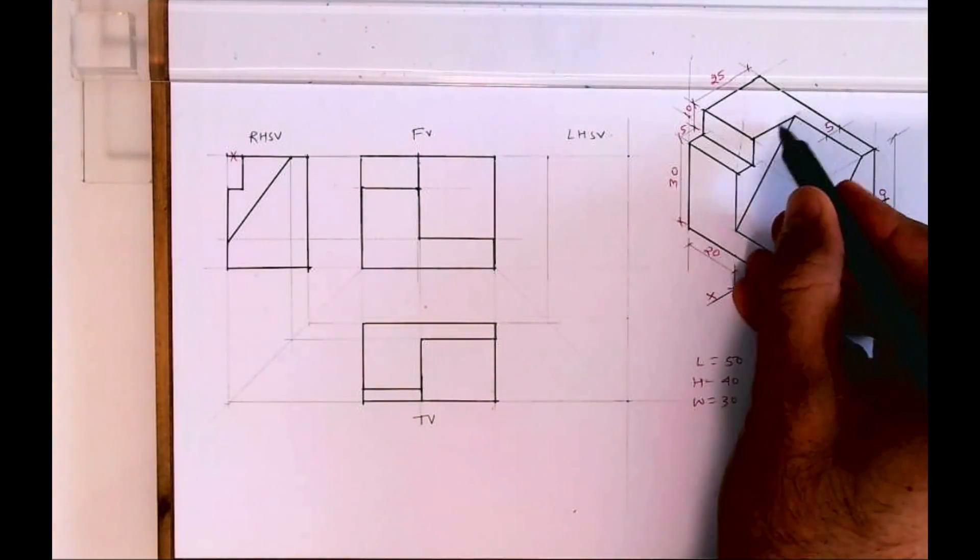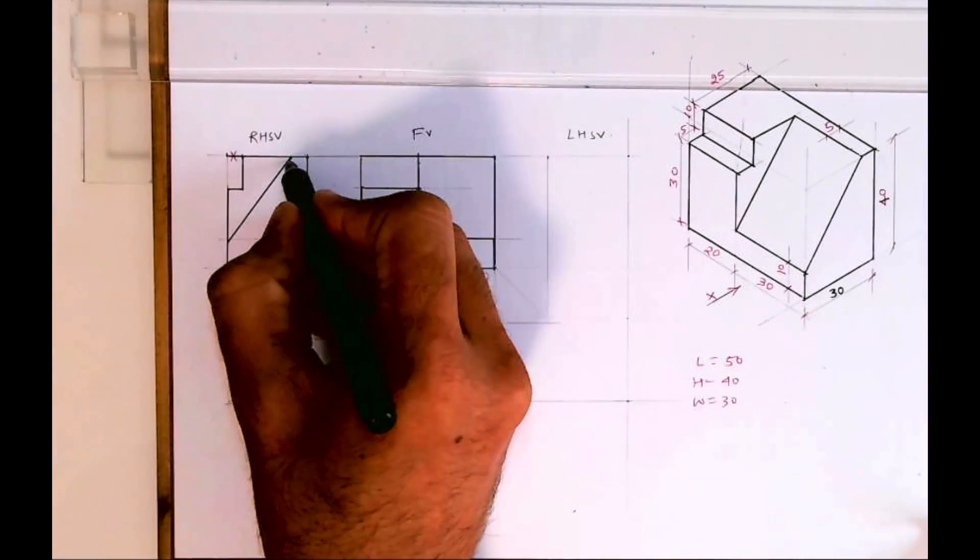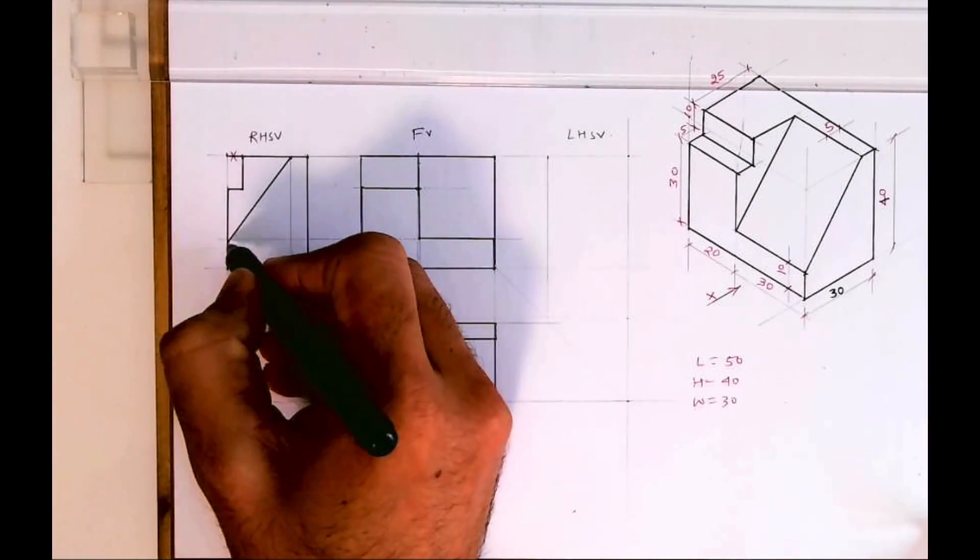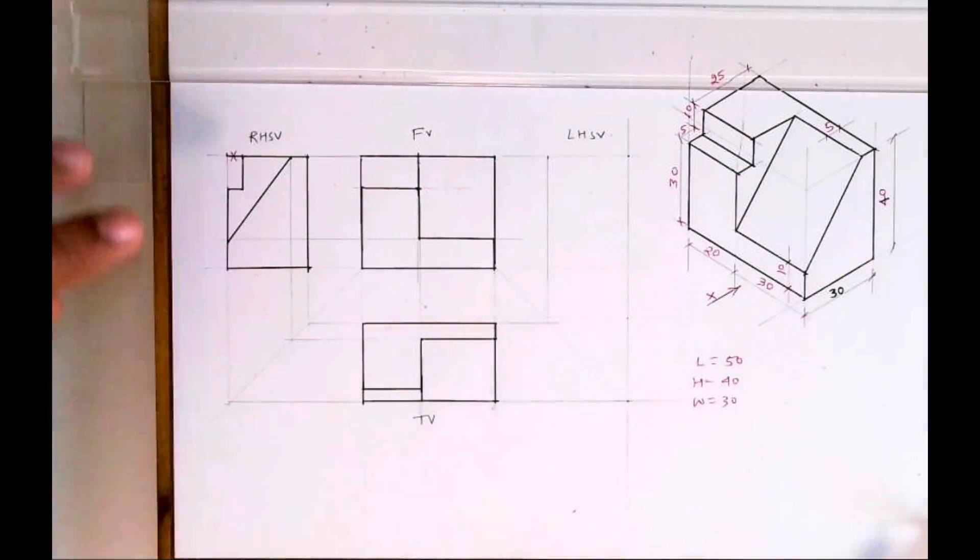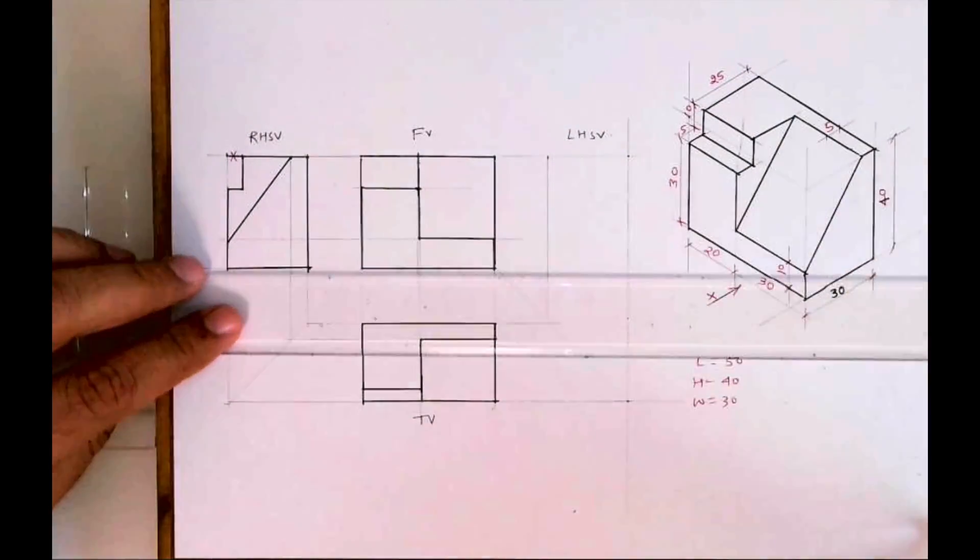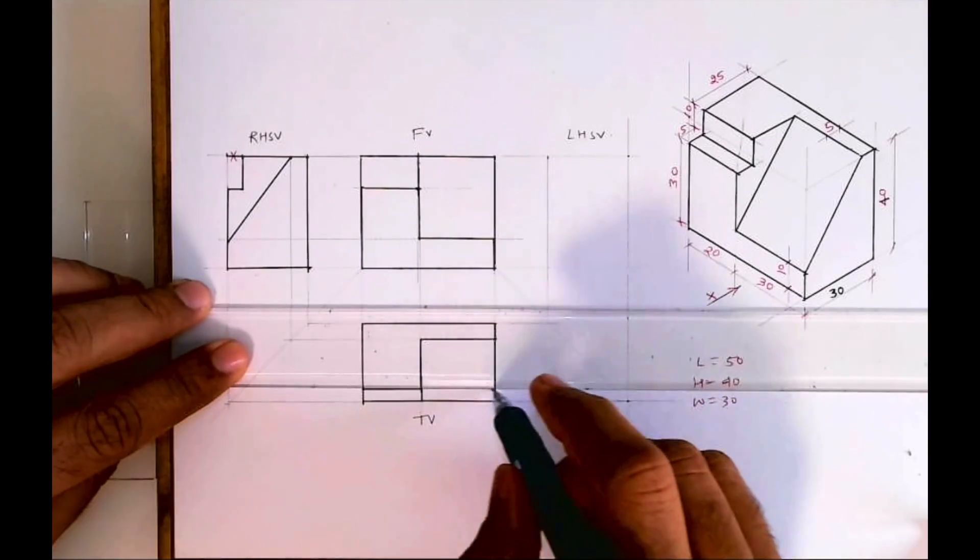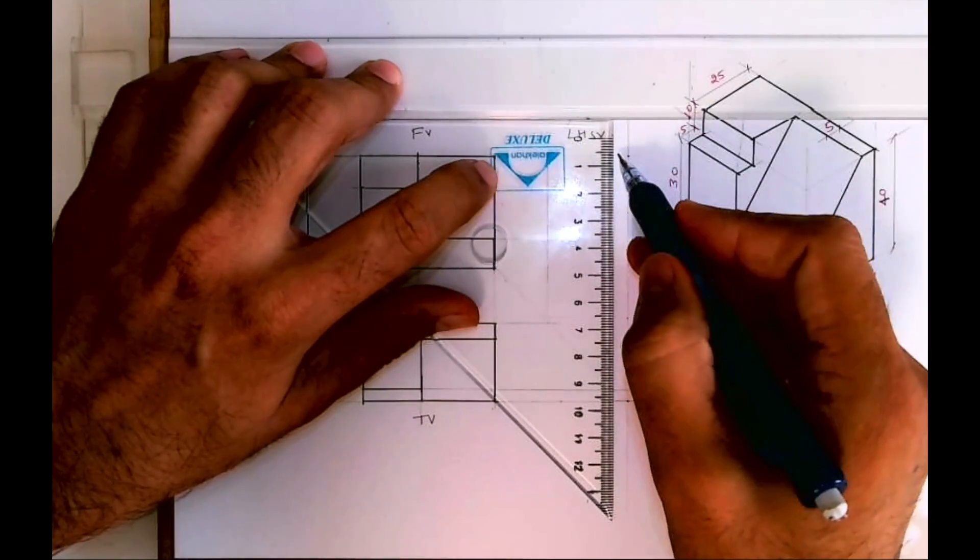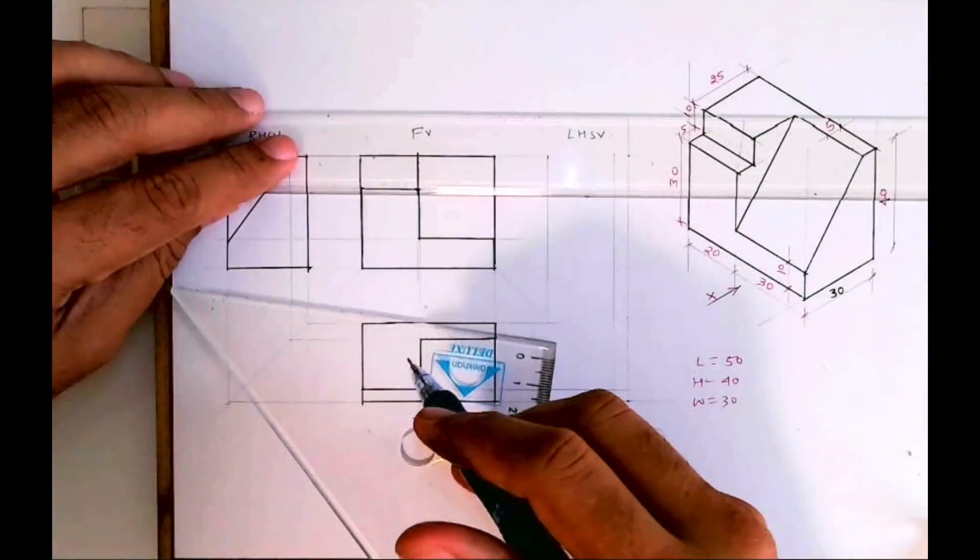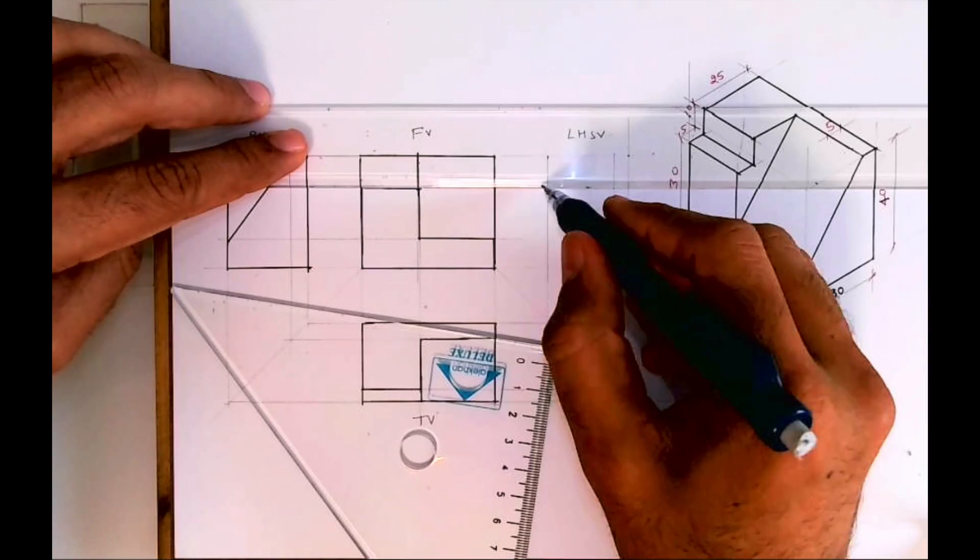Now for left hand side view, this part, see which is there in right hand side view, it will be there in left hand side view also. So first we will draw that part, because when you see from the other side you will see that part first.